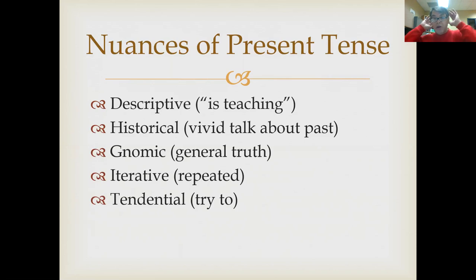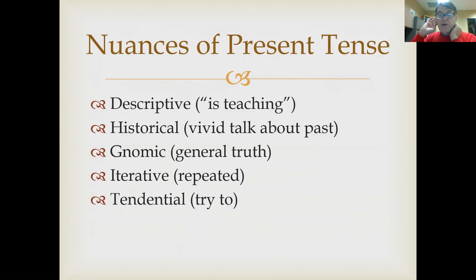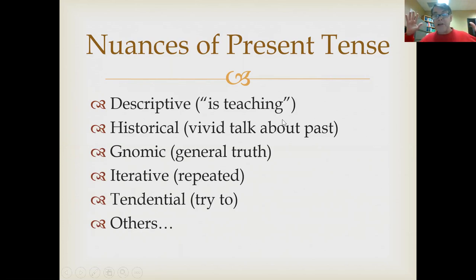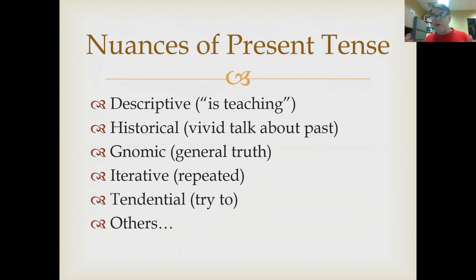There's also the tendential present — sometimes other connotations can leap out. You don't want to force them, but 'try to' can jump out of a translation. This is my pet peeve: a lot of times what preachers say from the pulpit about Greek, you can tell they know just enough to get it wrong — they do this a lot with tenses. The present tense doesn't always mean present time. There are lots of nuances, both in English and in Greek, that the present tense can have.